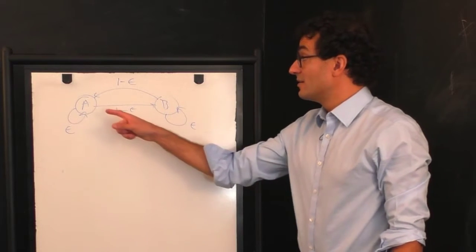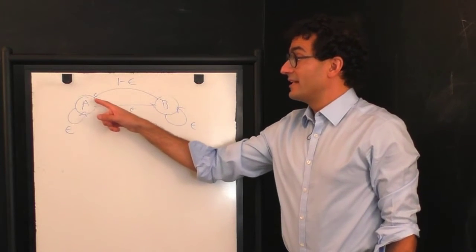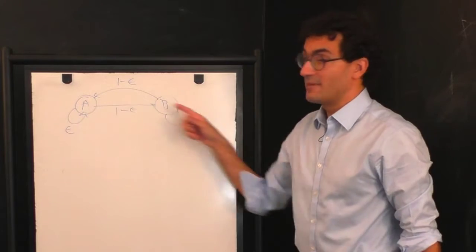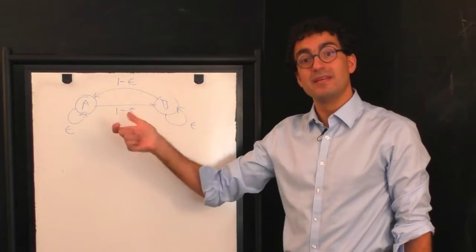If we make epsilon small, that means the probability to stay in state A is small, and so the system will tend to oscillate back and forth. It will go A, B, A, B, A, B.